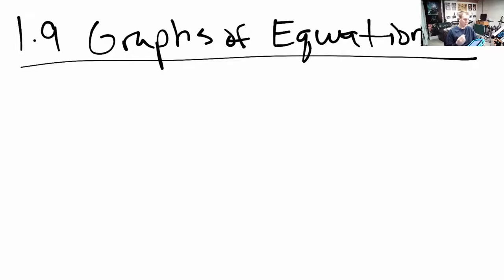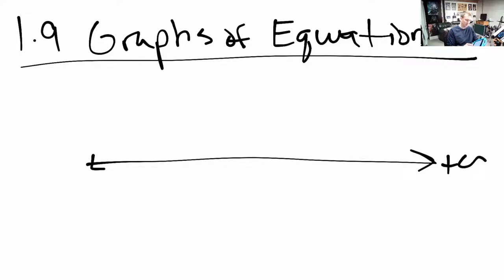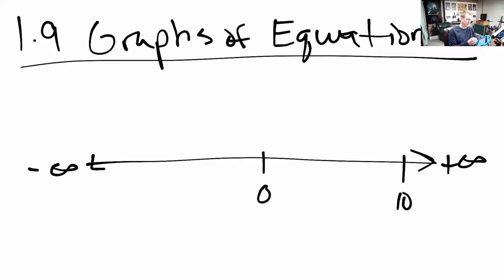Before I start plotting and graphing things, I want to talk about the coordinate plane. If we take a real line — this is positive infinity and this is negative infinity — we can think about a location on this line by giving a number, a numerical value. Here's zero, it's the middle of this line. Ten is ten things over here. Negative two is right here. We've got these locations that correspond to a number on this real line.